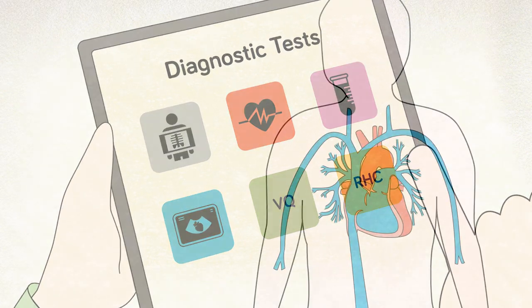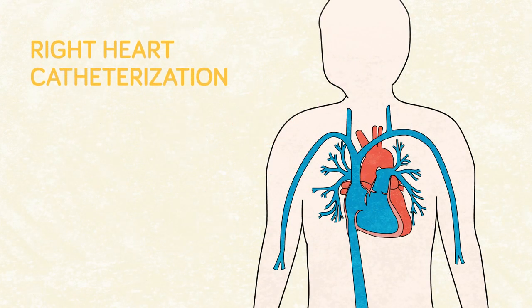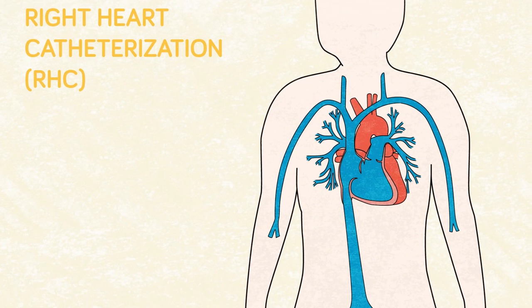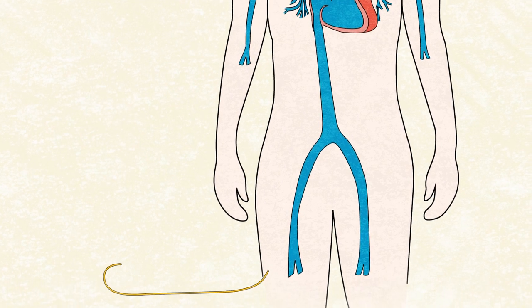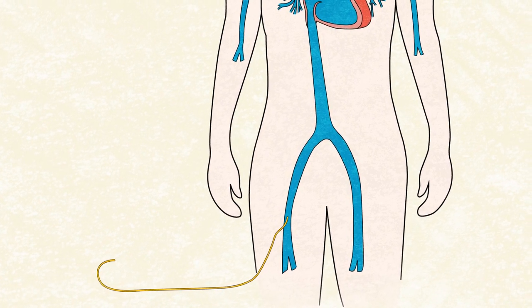The definitive test for an accurate diagnosis of PAH is the right heart catheterization. During this procedure, a thin, flexible tube called a catheter is inserted into a vein.